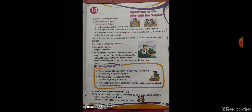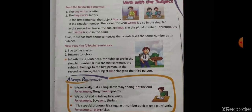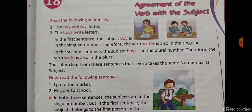If we start reading the chapter, first example is: 'The boy writes a letter.' In the first sentence, the subject 'boy' is singular, therefore the verb 'writes' is also singular. In the second sentence, the subject 'boys' is plural, that is why the verb is also plural. So, we have to keep in mind that whenever the subject in the sentence is singular, the verb is also singular.